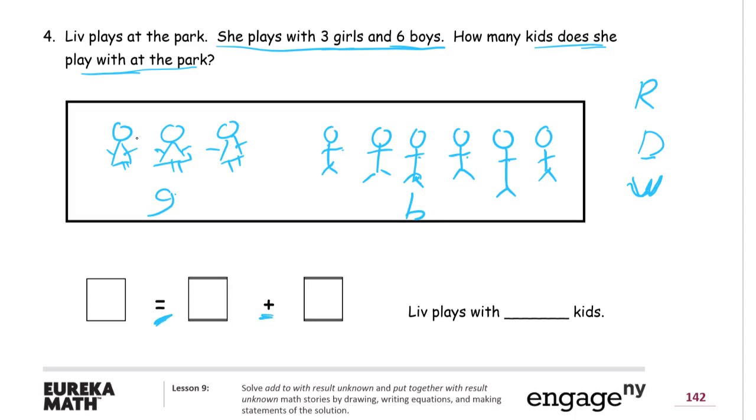The plus sign is here. So our addends, right, our parts, our addends have to go on either side of the plus sign. And our total has to go here. So this is one of those where the total goes first. So that's the thing. And how many kids does she play with at the park? Count them all, right? One, two, three, four, five, six, seven. There's nine. And our addends are three girls and six boys. She plays with nine kids.